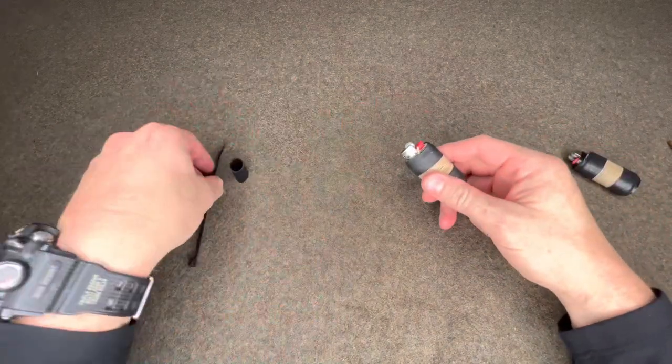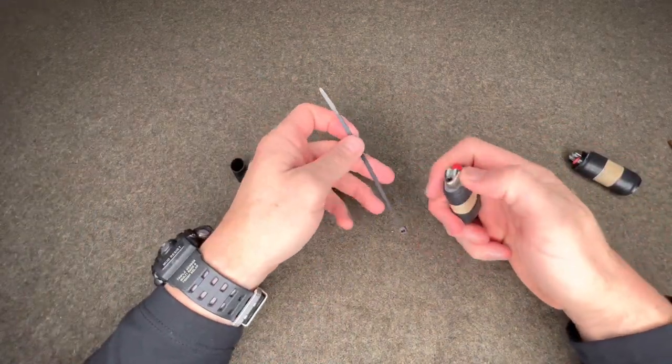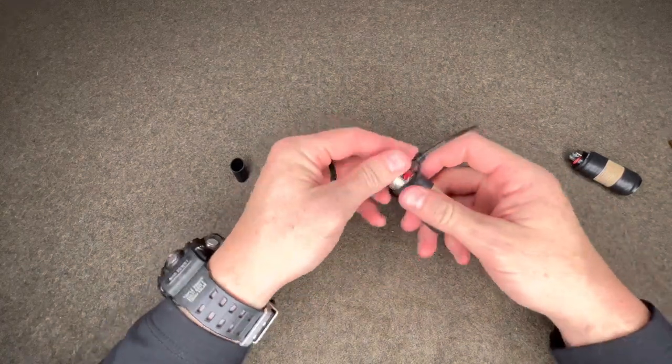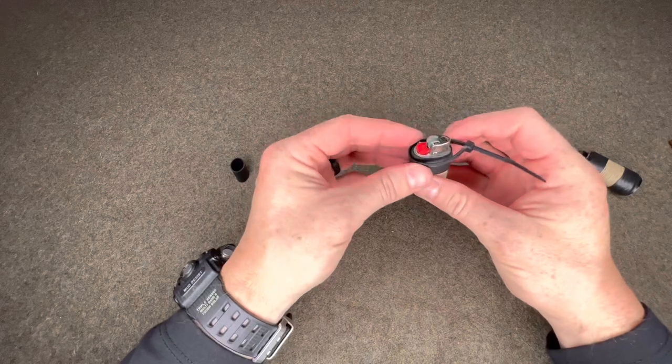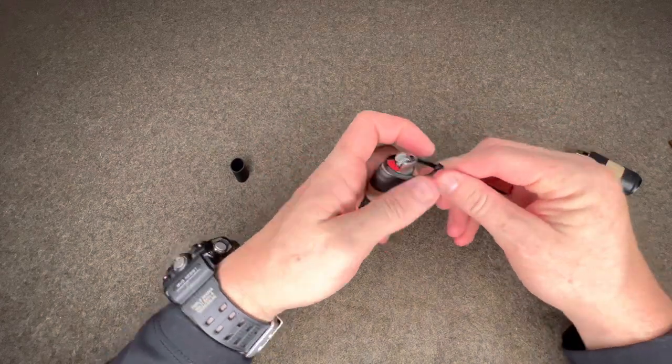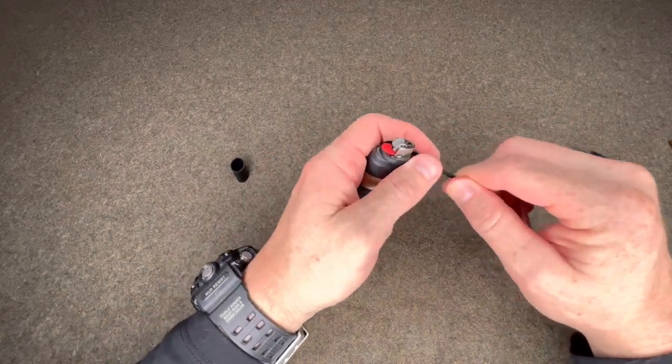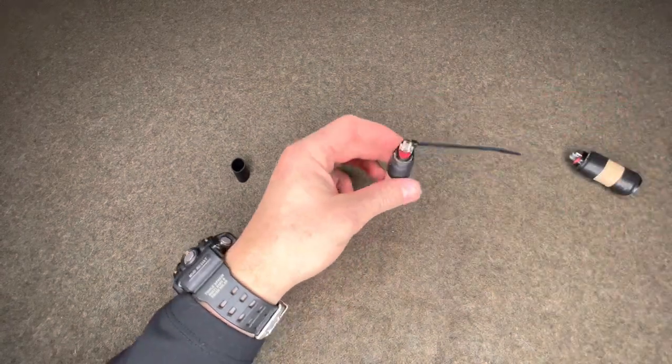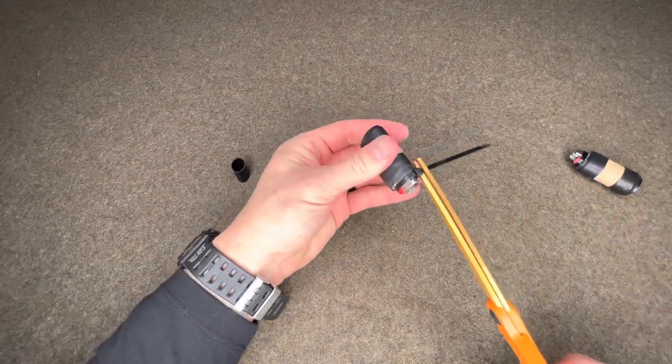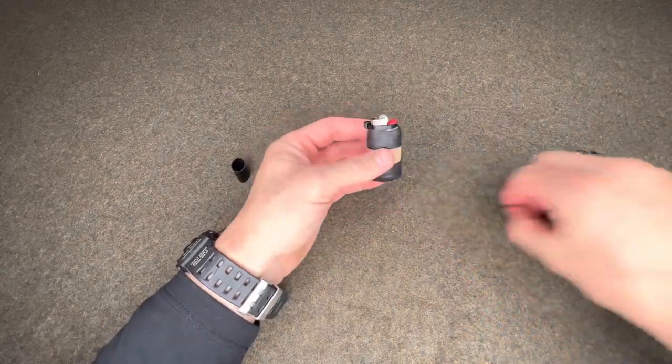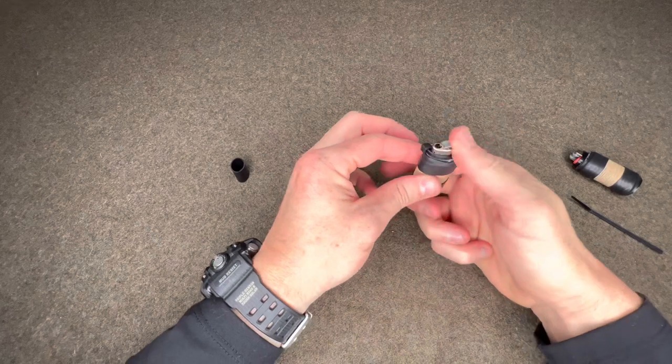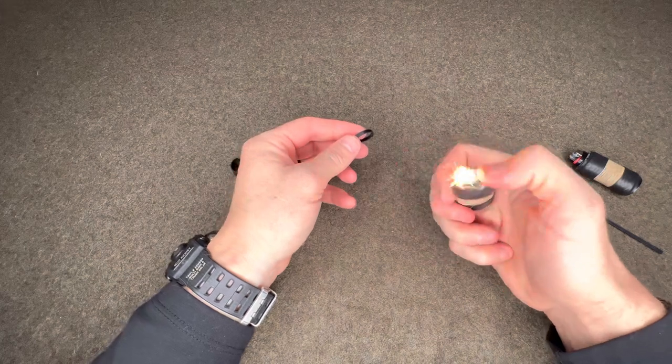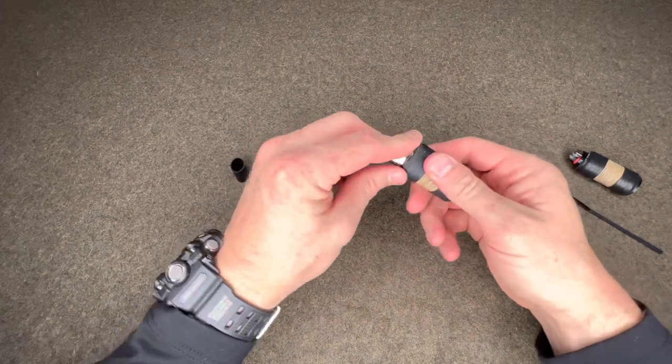And then lastly, what we can do is create the security strap so that the button, the fuel button, doesn't get depressed when in a pocket or bag or something. So these small zip ties fit nicely underneath the lip there. Pull it tight. Clean it up. And then it'll spark but you can't depress the fuel. And then when you want to actually use it, you can go ahead and peel it off, use the lighter, and then secure it back.